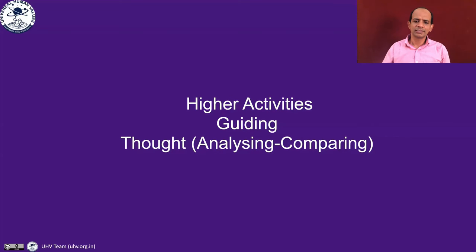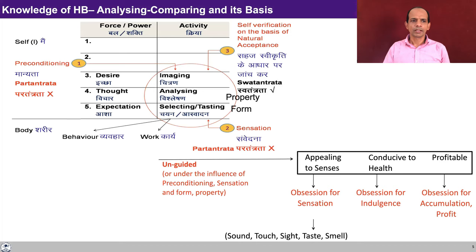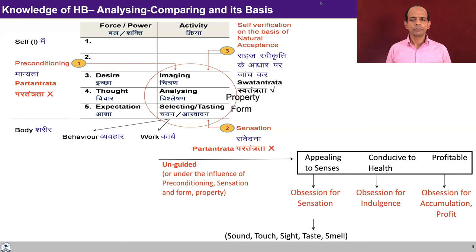Now how do the higher level activities guide the thought — that is, the activity of analyzing and comparing? Earlier, when the higher level activities were not activated, if you look at the activity of analyzing and comparing, there are three sources: preconditioning, sensation, and natural acceptance. Unless the higher level activities are activated, the lower level activities are enslaved by preconditioning and sensation, and only sometimes guided by natural acceptance.